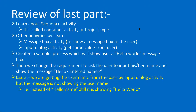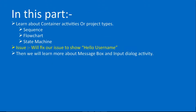Welcome to Part 5. In the last part we discussed the sequence activity, message box activity to show a message to the user, and input dialog activity which asks the user to input text. We designed a hello world message process which gets details from the user and shows them a message box. The requirement was to ask the user their name and show a message box saying hello then their name, but the issue was we were not displaying the name — it was only showing hello.